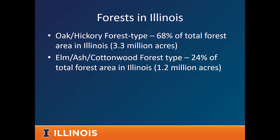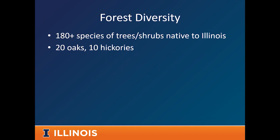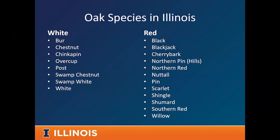Our forests in the state are actually very, very diverse even with all these different influences — an amazing amount of species and animals that utilize our forest. When I first moved to Illinois 13 or 14 years ago, I was blown away by the diversity I found across the state. We have about 180 species of trees or shrubs native to Illinois, including 20 different oak species and 10 different hickory species — just amazing diversity of woody species that call Illinois home. With just oaks, you can be overwhelmed with the number of species you can find. We have eight different species of white oaks and 12 different species of red oaks that can be found across the landscape.